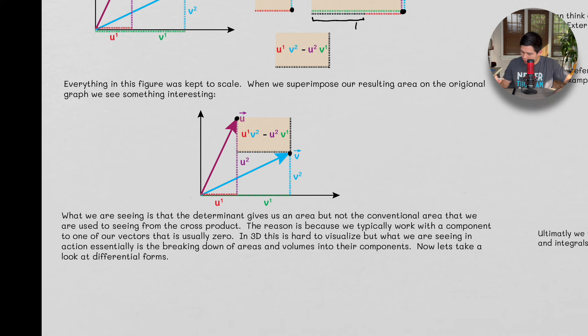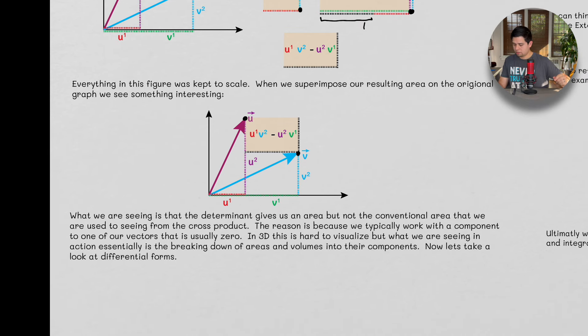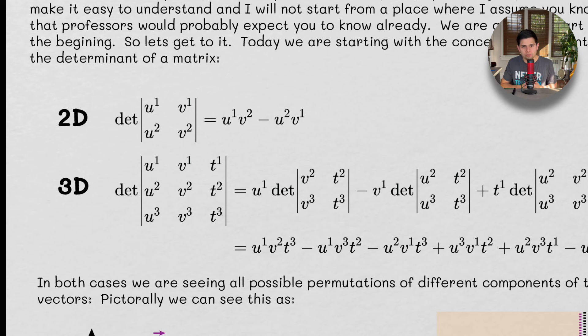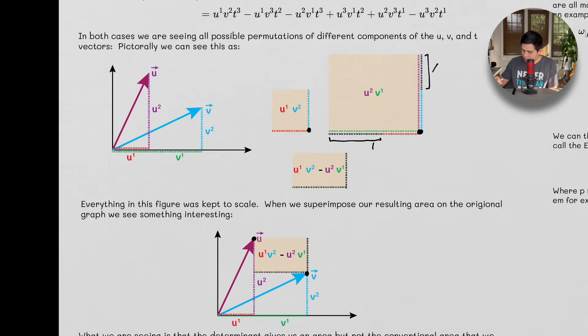So what we're seeing is that the determinant gives us an area, but not the conventional area that we're used to seeing from the cross product. The reason here is because typically when we work with a component of one of our vectors, it's usually zero when we do the cross product. Usually when we do this, if you're new to linear algebra, one of these vectors is going to have a component of zero. And so this is going to go away, and you just get this times this, which is an area. But if it doesn't go to zero, it's still an area. It just looks like this with respect to these two vectors.